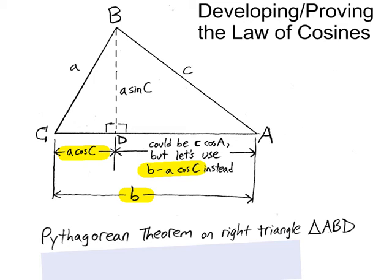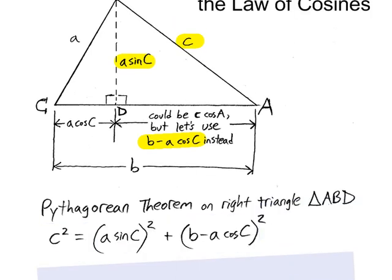So as you may have already seen here, Pythagorean theorem on the right triangle ABD. So on this triangle right here, we're going to perform just the Pythagorean theorem that you used in geometry. And we're going to use the three lengths that you have highlighted right here.